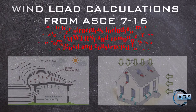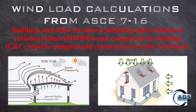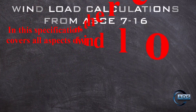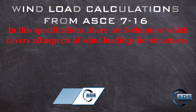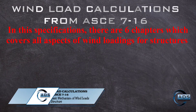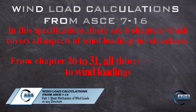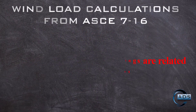Buildings and other structures, including the main wind force resisting system and components and cladding, must be designed and constructed to resist wind loads. In this specification, there are six chapters which cover all aspects of wind loadings for structures, from chapter 26 to 31.